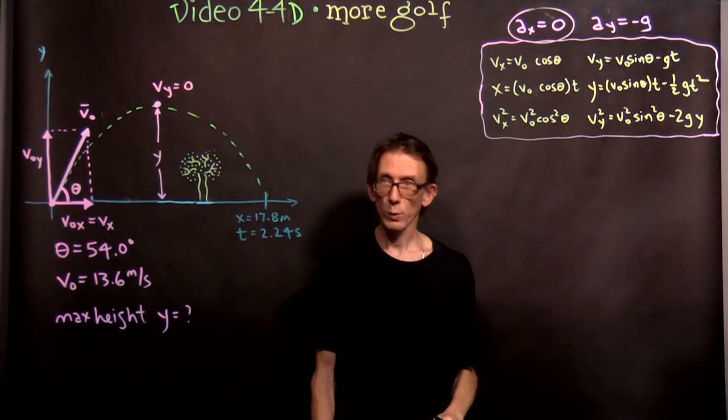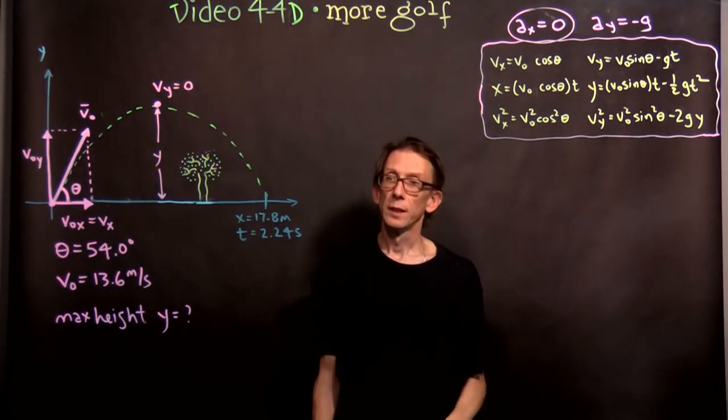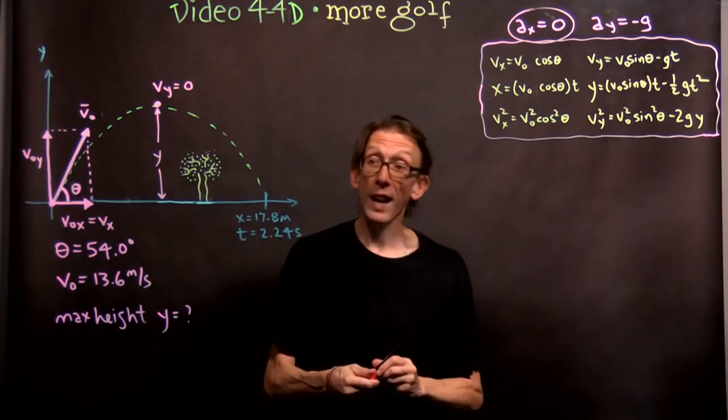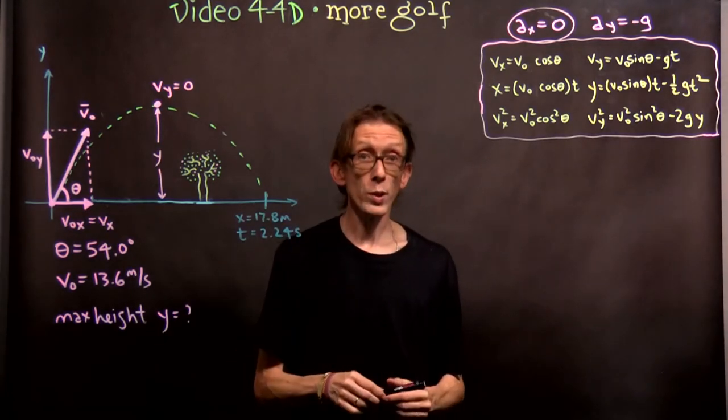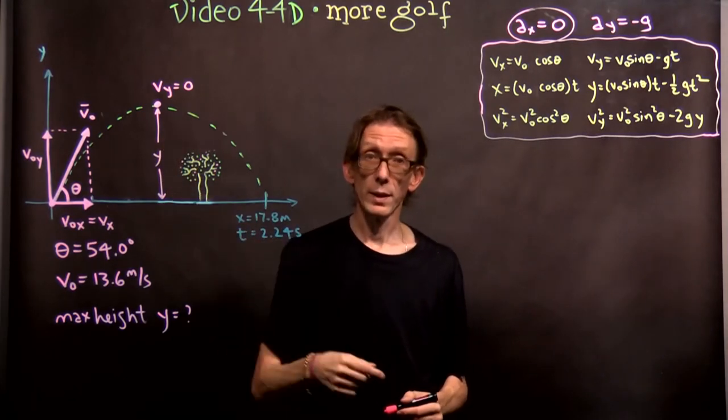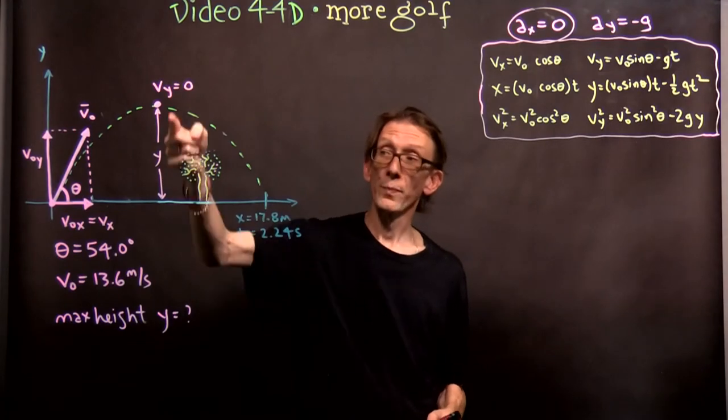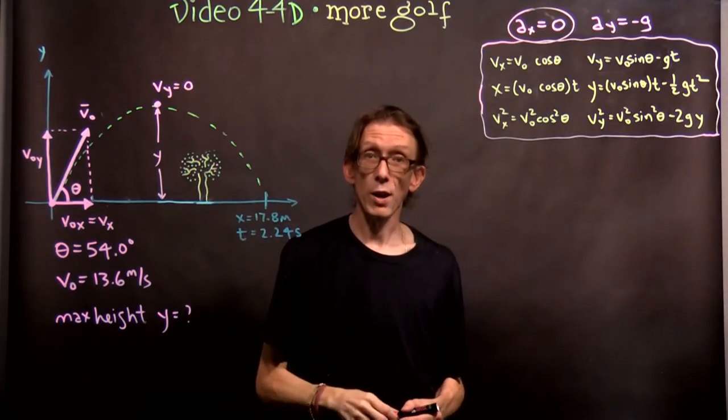So up here, vy equals zero. For no other time during the flight does vy equal zero. But up there, it equals zero. So we know that. In other words, I could have decided to use the time of 1.12 seconds as a condition for finding that maximum height. But instead, I'm going to use the condition that vy is zero at that maximum height and solve for it.